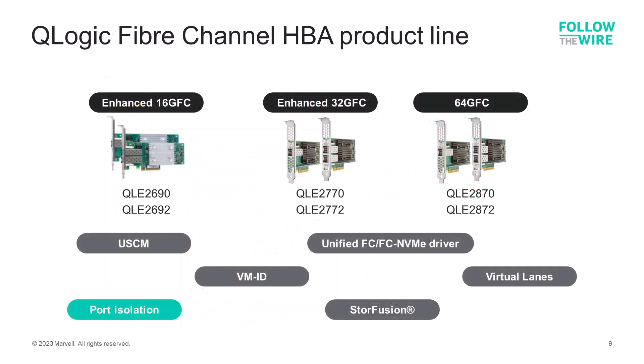Here's the portfolio of Q-Logic Fiber Channel HBAs. The Q-Logic QLE 2690 series are single and dual port adapters that provide 16 gigabit connectivity. The Q-Logic QLE 2770 series adapters provide 32 gig Fiber Channel connectivity, and the Q-Logic QLE 2870 series are the 64 gig Fiber Channel offerings. All these adapters are designed with port isolation architecture to ensure that your customers get predictable and reliable storage performance for their enterprise applications.